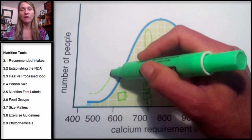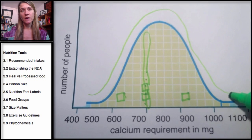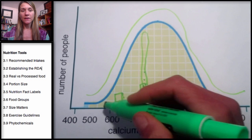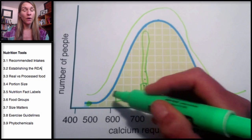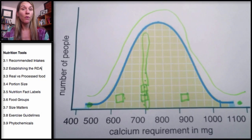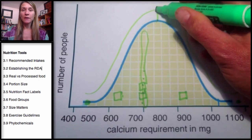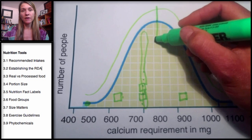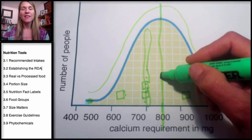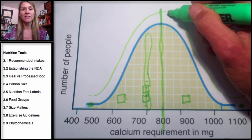This whole group would need 700 milligrams of calcium. Once the data is plotted, it always forms the shape of a bell curve. There are some people who need very little — 400 milligrams of calcium — and some people are going to need 1,100, 1,200, or even more calcium per day. But the average would probably be around 750, and again I'm just using this as an example.